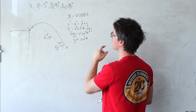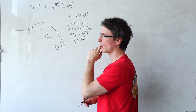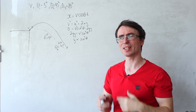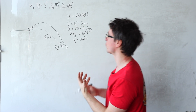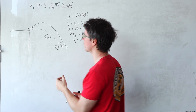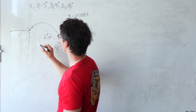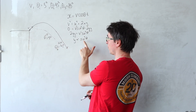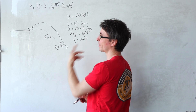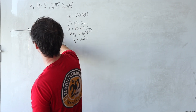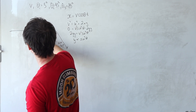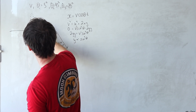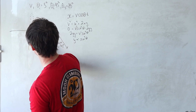For theta equal to 85 degrees, the cosine is close to 90 degrees meaning it's close to zero but not quite. What happens is that the vertical height is going to be much bigger, so for 85 degrees it's going to shoot up very steeply like this.